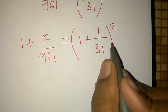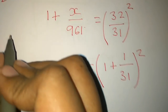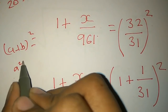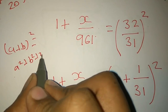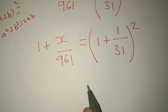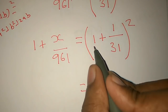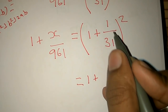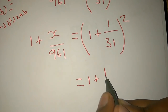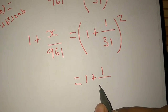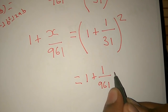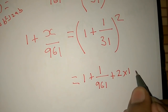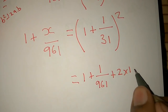This is the (a + b) whole square form. We know that (a + b) whole square equals a square plus b square plus 2ab. If we write this down, this is a and b. 1 square is 1. b square — 1 square is 1. Plus 2ab: 2a is 1, b is 1.